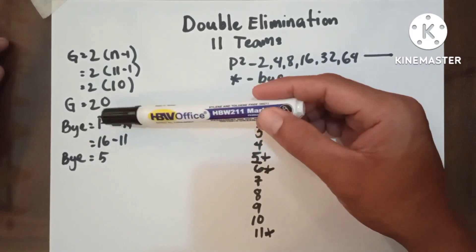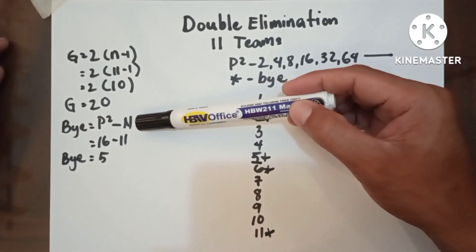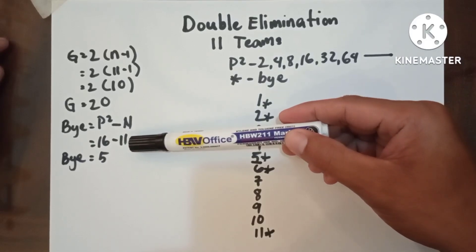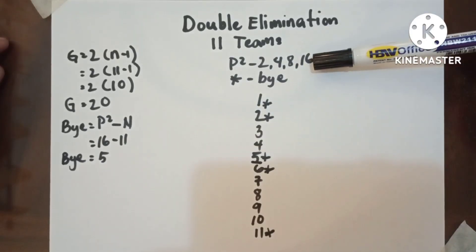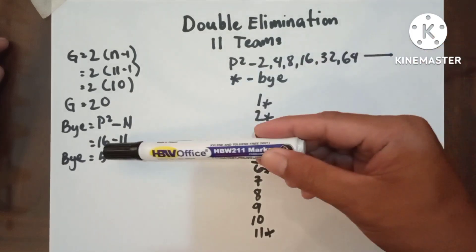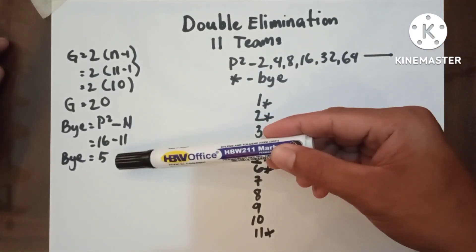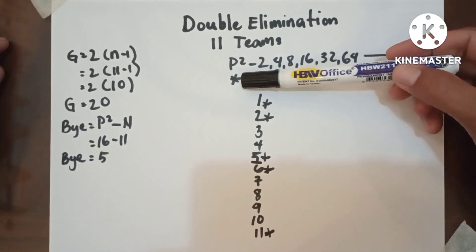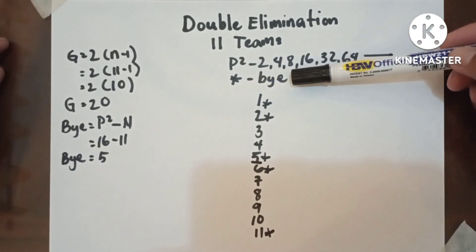We have bye equals power of 2 minus n. The next higher power of 2 to 11 is 16, so that 16 minus 11 equals 5. And take note that we use the asterisk to identify the bye.